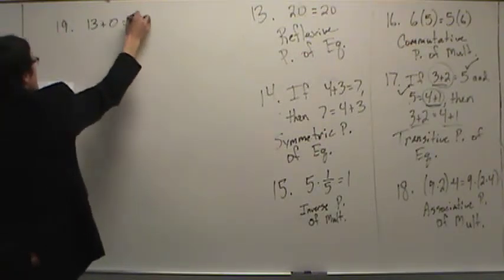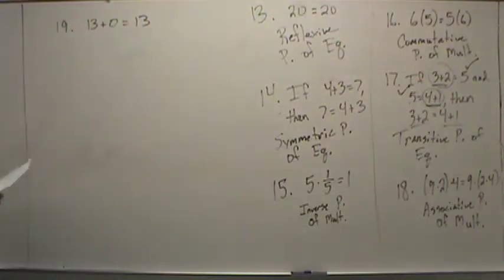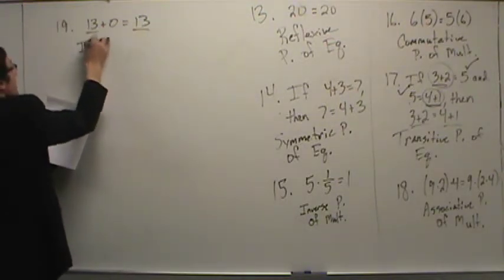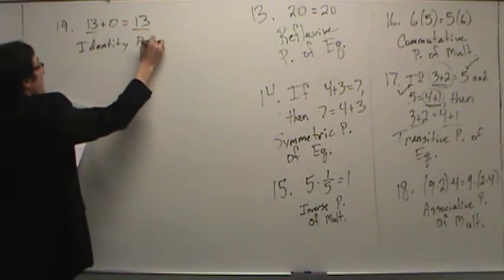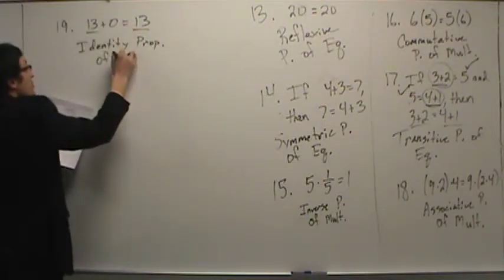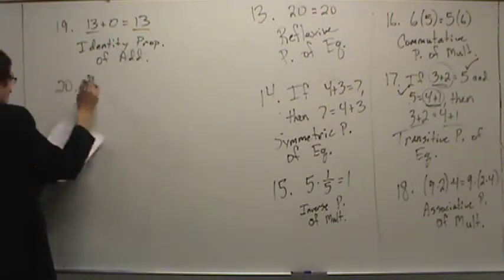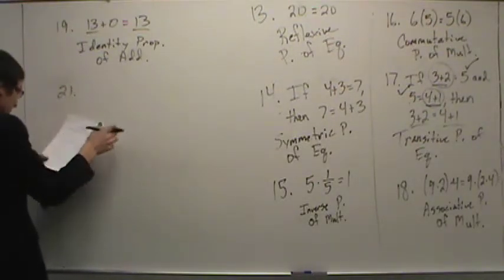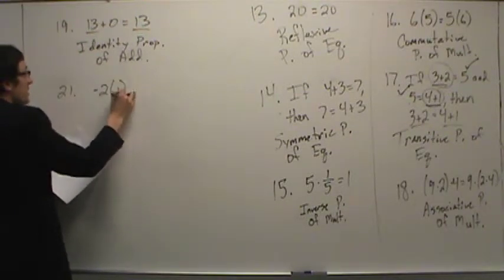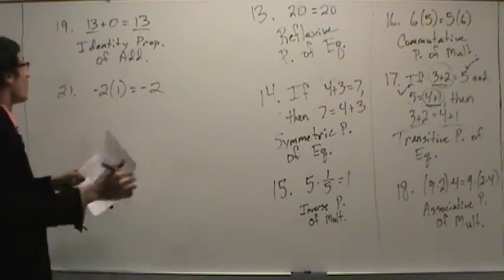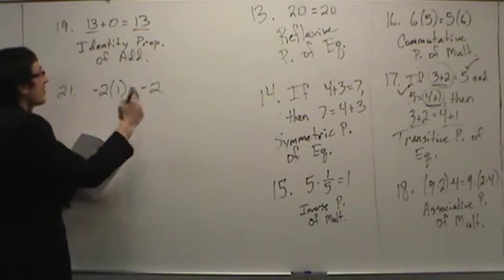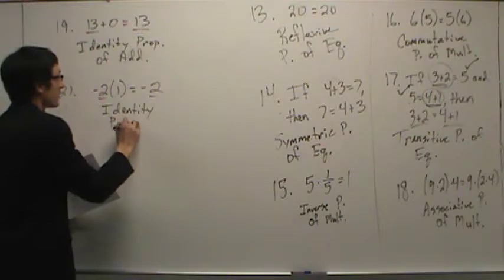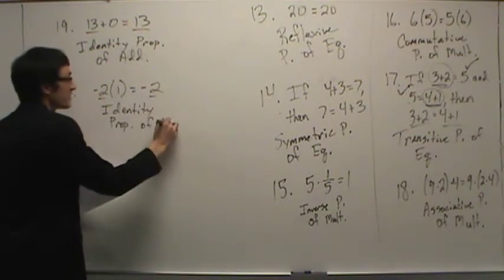Number nineteen: thirteen plus zero equals thirteen. Ones and zeros give a clue to either identity or inverse. We started with thirteen and ended with thirteen — this is the identity property of addition. Number twenty was omitted. Number twenty-one: negative two times one is negative two. Ones and zeros again — it's either identity or inverse. We started with negative two and ended with negative two, so this is the identity property of multiplication.